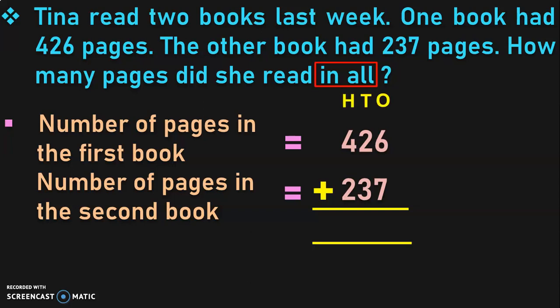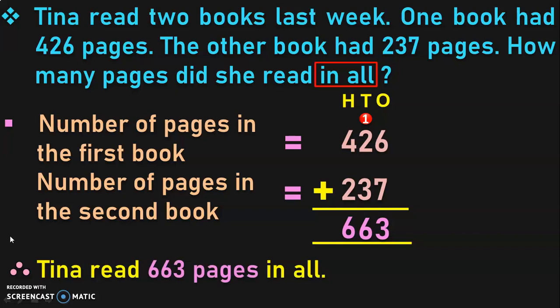Begin the addition from the 1's place. 6 plus 7 is 13 — write 3 in the 1's place and take 1 as a carryover to the 10's place. Next, add the digits in the 10's place: 1 plus 2 is 3, and 3 plus 3 is 6. Next, move on to the 100's place: 4 plus 2 gives 6. So the sum of the two 3-digit numbers is 663. Therefore, Tina read 663 pages in all.